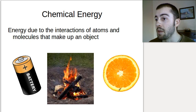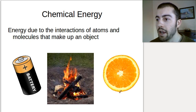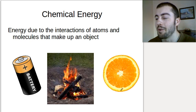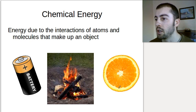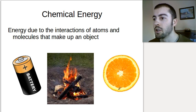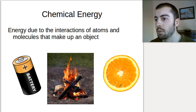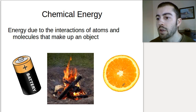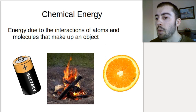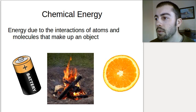A big example of chemical energy is food. Food has chemical energy, and that's why we eat it — we can take that chemical energy and transform it into whatever form of energy we need. So if we want to move, we need kinetic energy, and we can convert the chemical energy from our food into kinetic energy as we move.